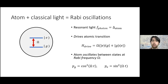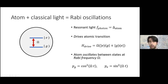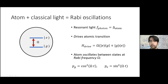Classical light: here we apply light at a frequency resonant with the ground-to-excited-state transition. This adds a simple drive term to the Hamiltonian. There's no information about the state of the light itself — it's just an external field causing the system to oscillate at Rabi frequency Ω between ground and excited state. The probability of being in each state will show characteristic cosine-squared and sine-squared oscillations.